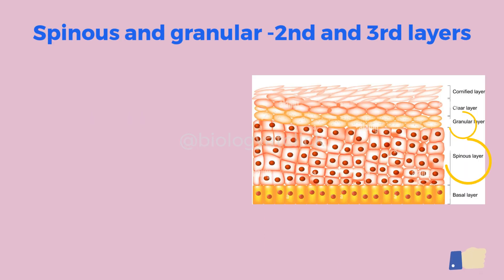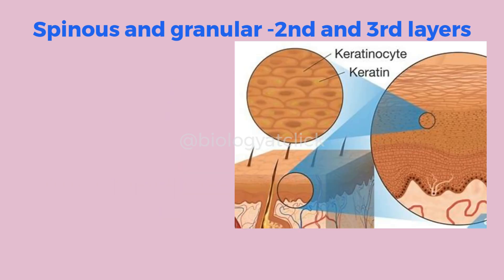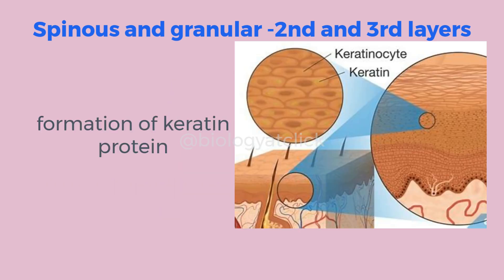Next are the spinous and granular layers. Cells keep differentiating and vary in shape and size, giving rise to the spinous layer and granular layer. As these layers are far away from the blood supply found in the dermis layer, the cells begin to shrivel and die. This results in the formation of a protein called keratin.